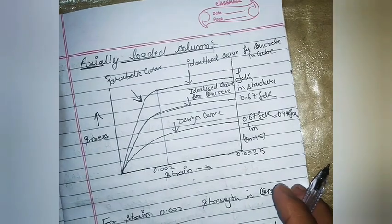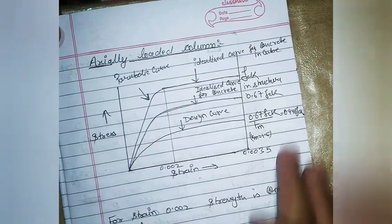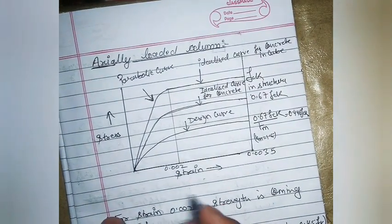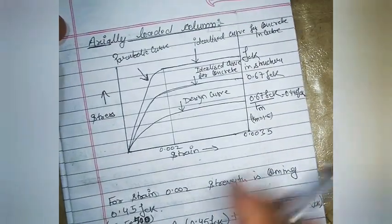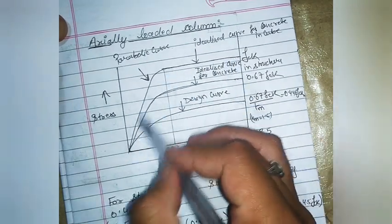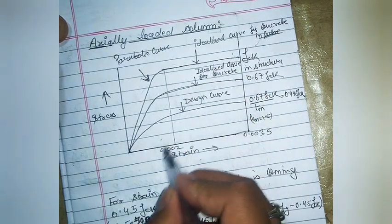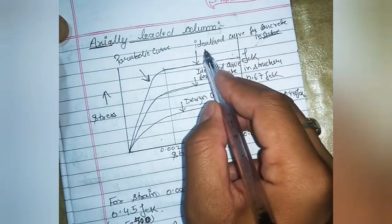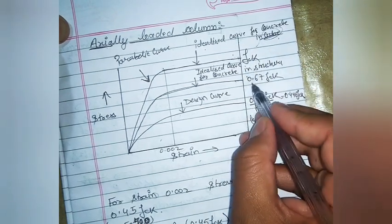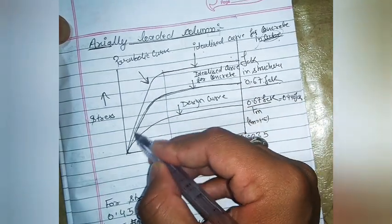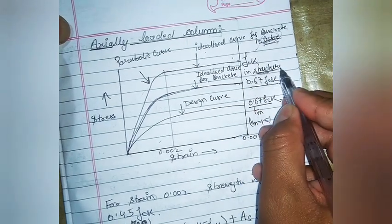Now let us find how much load the column section can take — we will take an axially loaded column. The stress-strain diagram for concrete shows an idealized curve for concrete cubes, which is parabolic up to a strain of 0.002 and then rectangular. When used in a structure, the strength is assumed to be 0.67fck, somewhat less than the cube strength fck.